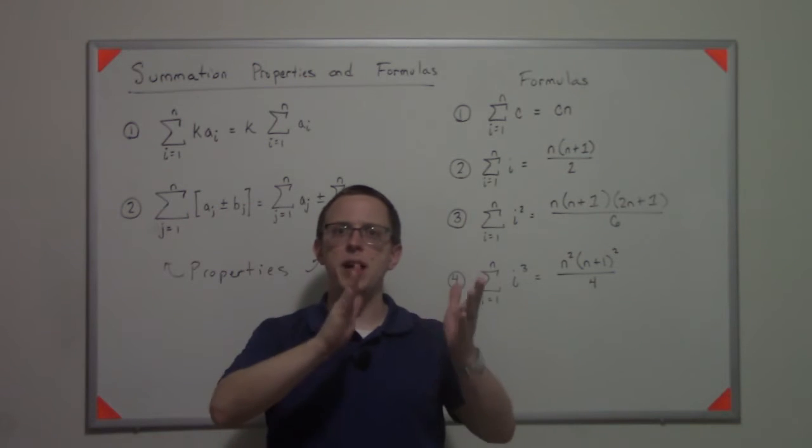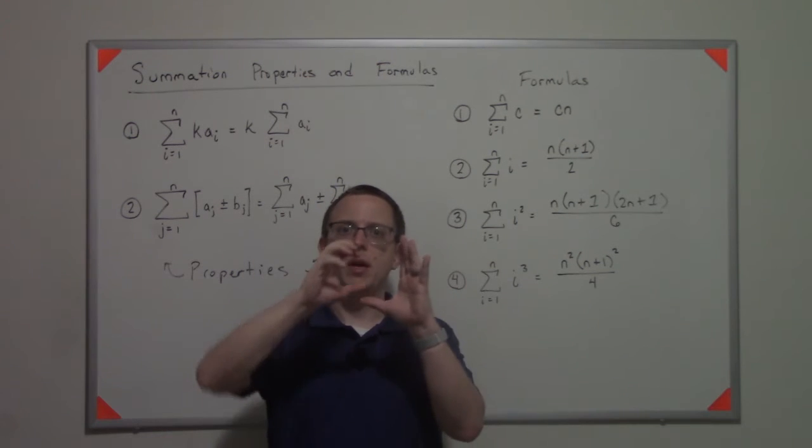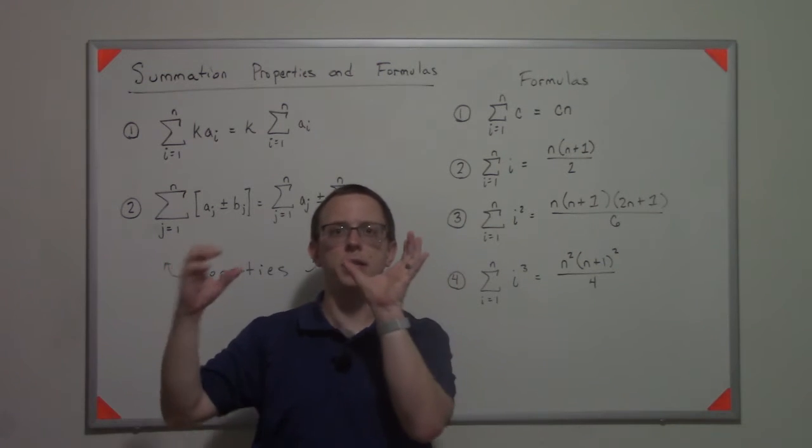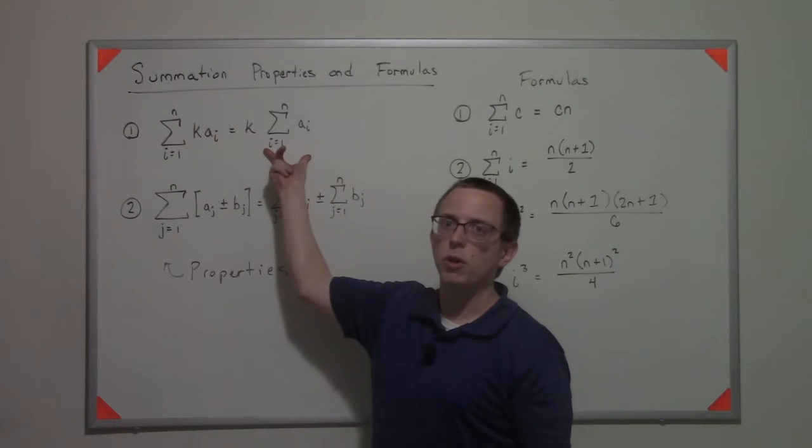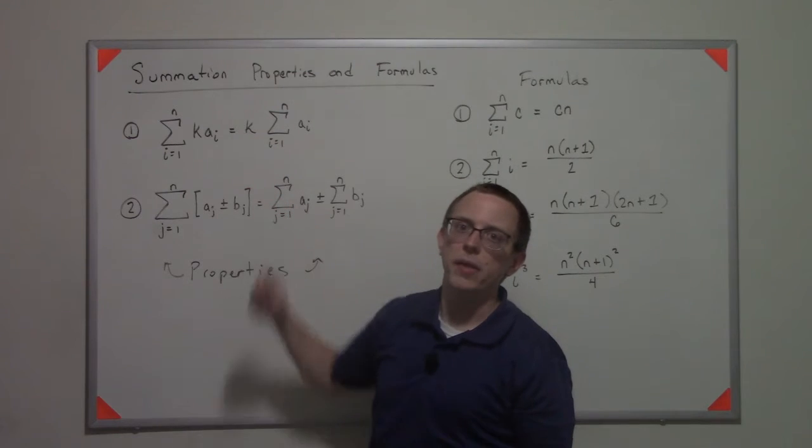So if it's three times something every time, I can pull that three out front and just evaluate the sum with some other formula and then at the end multiply that.